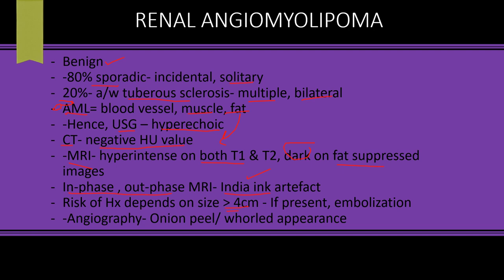Because of the fat component, angiomyolipoma will give an India ink artifact on MRI. The risk of hemorrhage depends on size — more than four centimeters can bleed — and hemorrhage is treated by embolization. On angiography it has an onion peel or whorl appearance like a fibroid, and there may be pseudoaneurysms but no AV shunting or AV fistula.